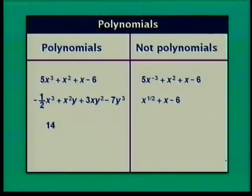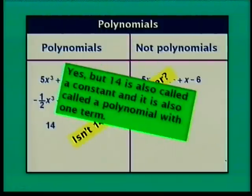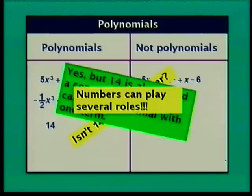14 is a polynomial. Some of you might be thinking, isn't 14 just a number? Well yes, but 14 is also called a constant, and it's also called a polynomial with one term. Numbers can play several roles.